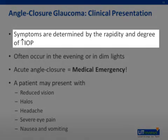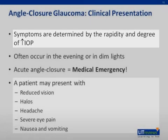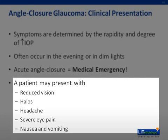The clinical manifestations of angle closure glaucoma are determined by the rapidity and degree of intraocular pressure elevation from angle closure. If the rise in intraocular pressure is slow, the patient may remain asymptomatic, as in chronic angle closure glaucoma. A rapid elevation, as in acute angle closure glaucoma, may result in reduced vision, halos around lights, headache, severe eye pain, nausea, and vomiting.